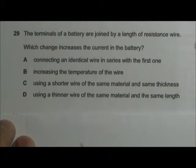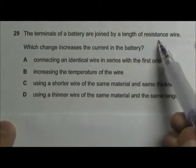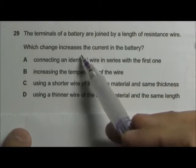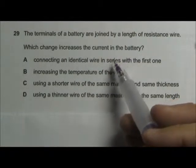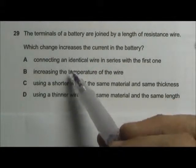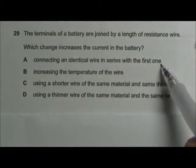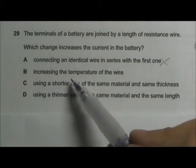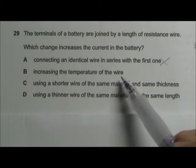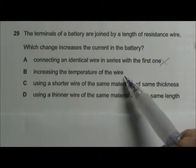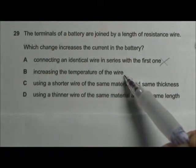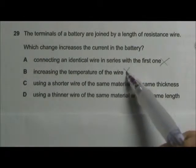We have the terminals of a battery joined by a length of resistance wire. So we can see this resistance wire as a resistor. Which change is going to increase the current in the battery? Option A: if you have to connect another identical wire in series with the first one, you are going to increase the total resistance. When the total resistance of the circuit increases, the current will decrease. So A is wrong. By increasing the temperature of the wire, because the wire is a non-ohmic conductor, by increasing the temperature you are going to increase the resistance of the wire and the current will decrease. So it cannot be the answer as well.